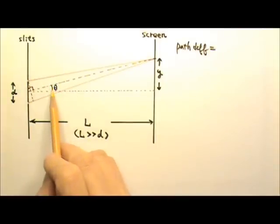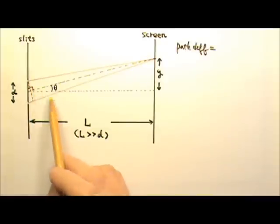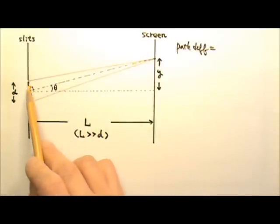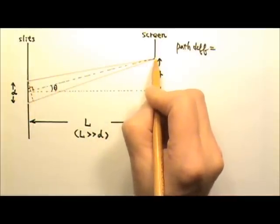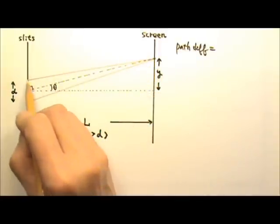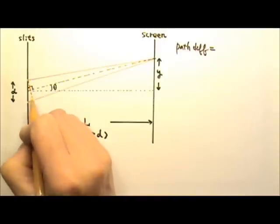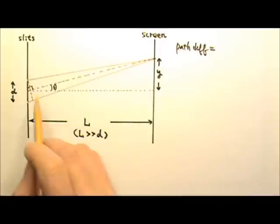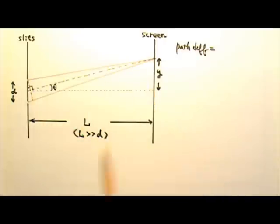If this angle is theta, then this slim angle right here is also theta. Because we have similar triangles. This right triangle and that right triangle, they are similar. Because this line from the point on the screen to the center between the two slits, this line is perpendicular to that dotted line. And this line to the center of the screen is perpendicular to this line right here. That's why these two angles must be equal. Because over here we have 90 degrees, 90 degrees.